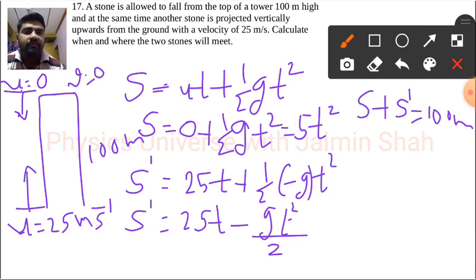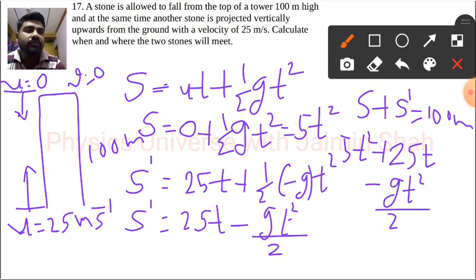So 100 meters is the total distance. Put this S in here, so 5t squared will be there plus S dash. What is S dash? 25t minus gt squared by 2. Now gt means 5t squared.